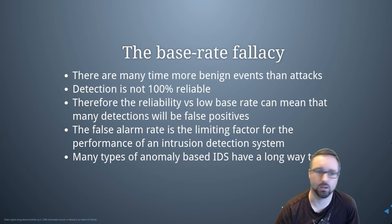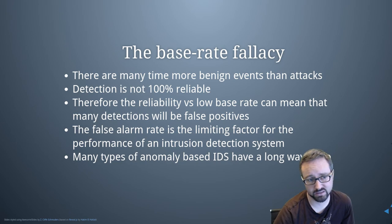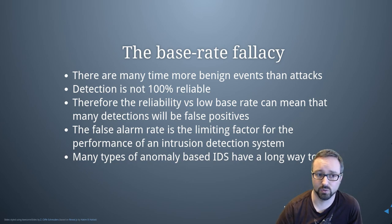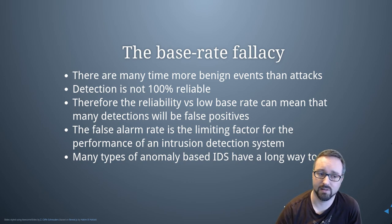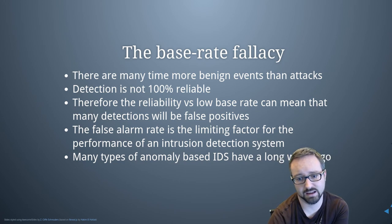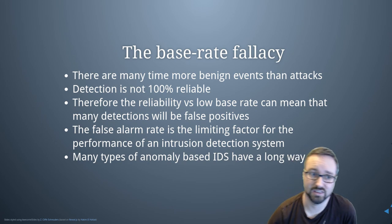Based on this, many anomaly-based IDS systems have a long way to go in terms of being practically useful. It's an argument in favour of signature-based detection which, depending on how the rules are written, can be more accurate in detecting known attacks. However, signature-based detection still has the well-known problem of missing new attacks, and it's often easy to circumvent by simply changing the specifics of the attack.